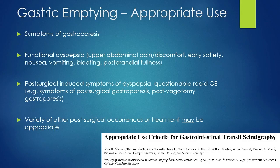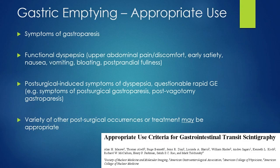Post-surgical induced dyspepsia, including whether there's rapid gastric emptying — this may occur with symptoms of post-surgical gastroparesis or if they've cut the vagus nerve. Those are all highly appropriate indications. Other indications from multi-society criteria include post-surgical etiology, such as neural stimulator placement or surgery affecting the pylorus, where gastric emptying may also be appropriate.